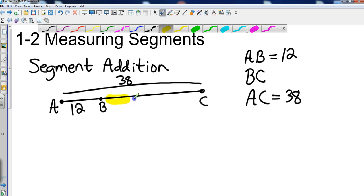In this case, if I was going to find out what BC was—this section right here—all I would need to do is take the entire section and subtract the smaller section, which means that BC is going to be 26. Pretty simple segment addition postulate. Postulate is just a statement.